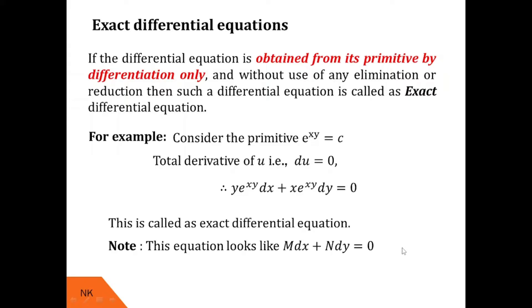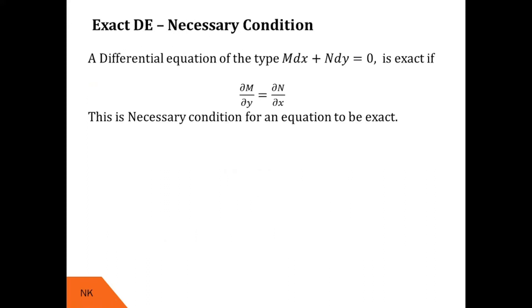Now let us see the necessary and sufficient condition for a differential equation to be exact. A differential equation of the type M dx + N dy = 0 is exact if and only if ∂M/∂y = ∂N/∂x. This condition is called the necessary and sufficient condition for a differential equation of this type to be exact.